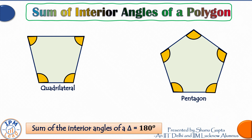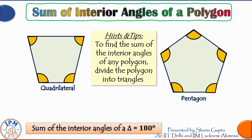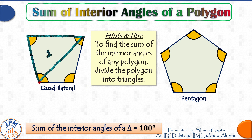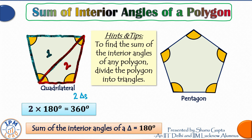Next, what's the sum of interior angles of a four-sided figure known as a quadrilateral, or a five-sided figure known as a pentagon? Here is a very smart tip: think in terms of triangles — divide the polygon into triangles. The yellow ones are the interior angles, and if we draw a diagonal right across, the sum of interior angles of this quadrilateral equals the sum of angles of these two triangles. For each triangle the angle sum is 180 degrees, so the angle sum for a quadrilateral is two times 180 degrees, that is 360 degrees.